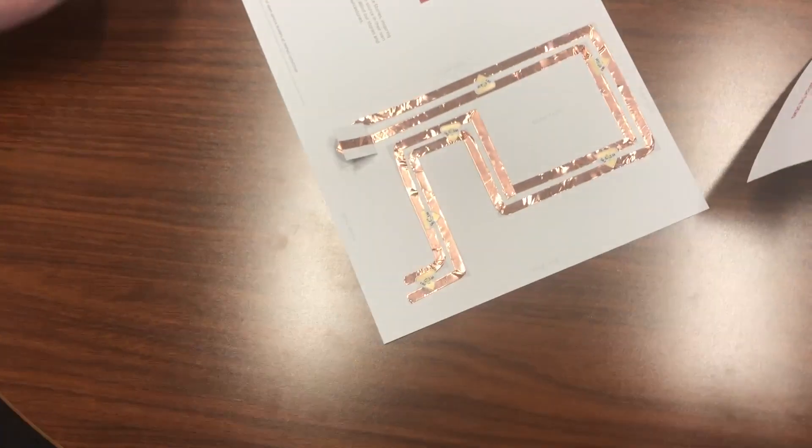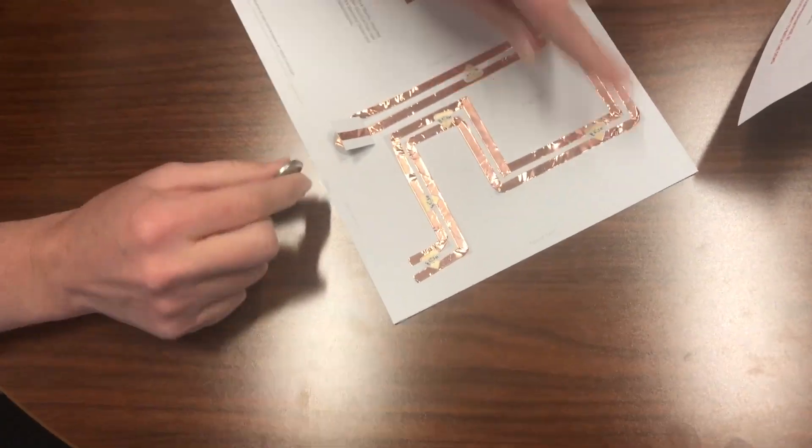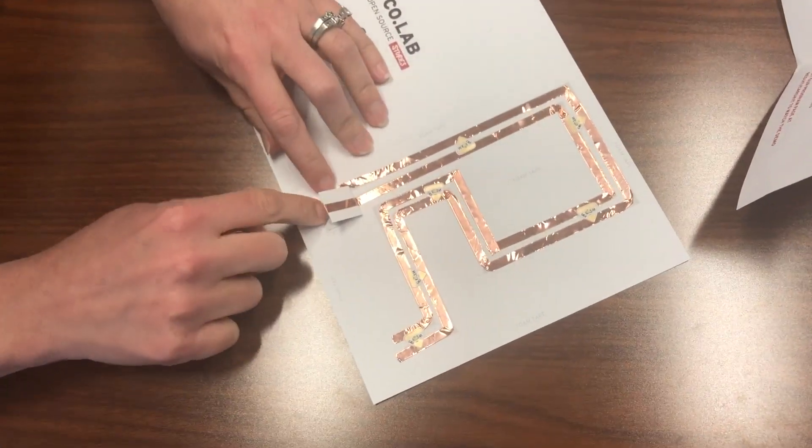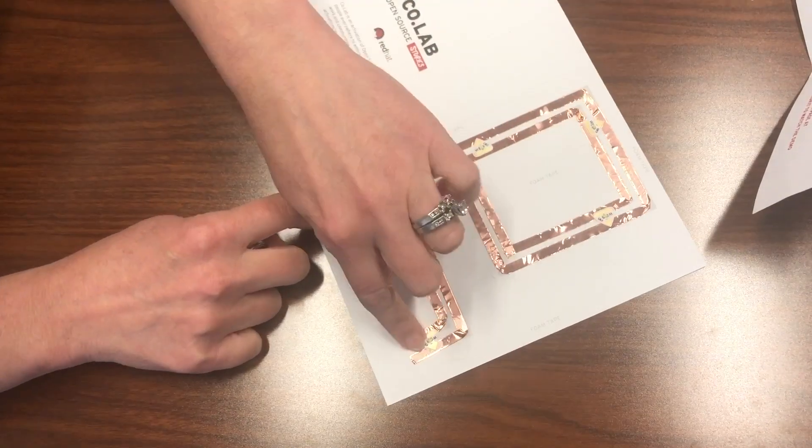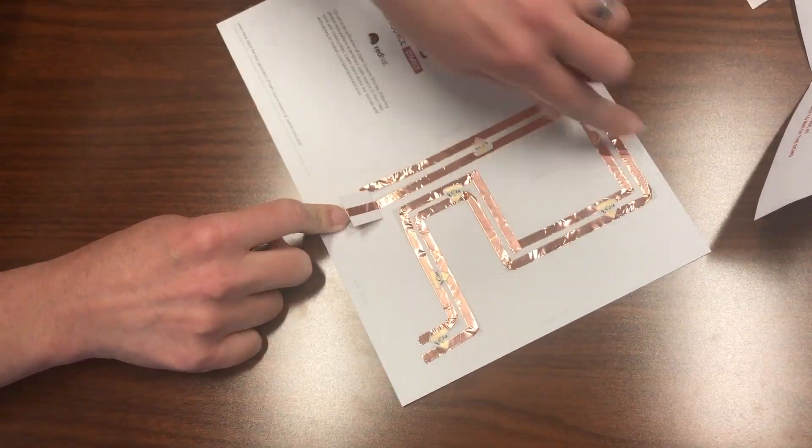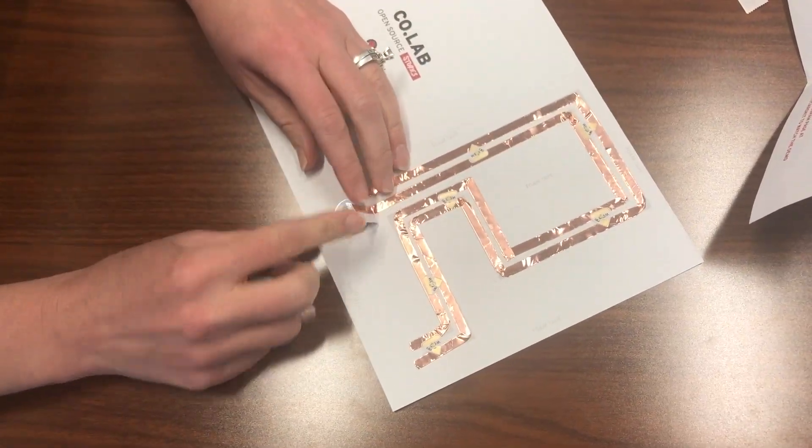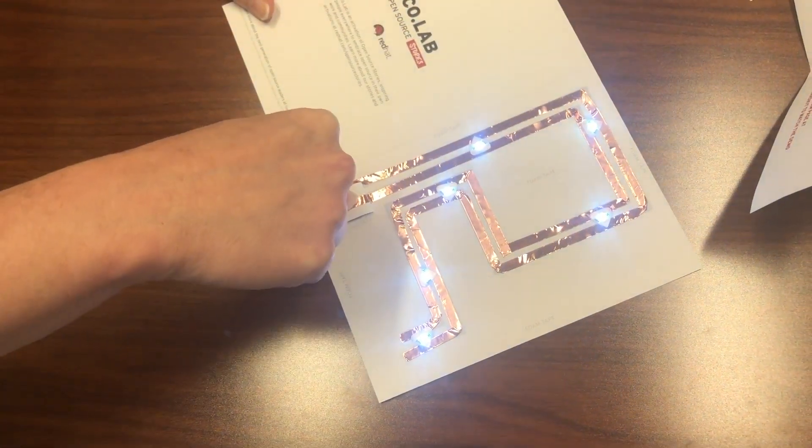So now we can test it and see if we have a working circuit. A working circuit has to make a complete loop. So that's what we'll have. We'll have a circle that goes from the battery all the way through the last LED up the other side. And if we're lucky, all our LEDs will light up just like that.